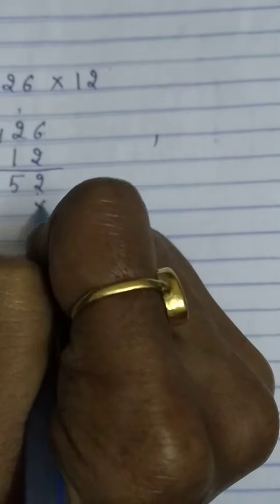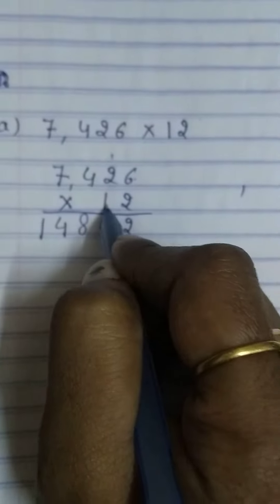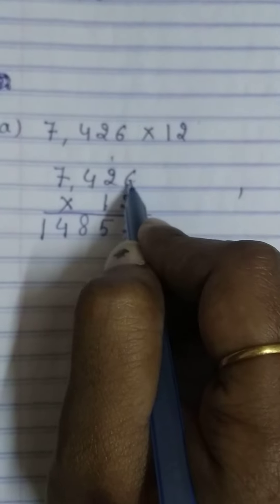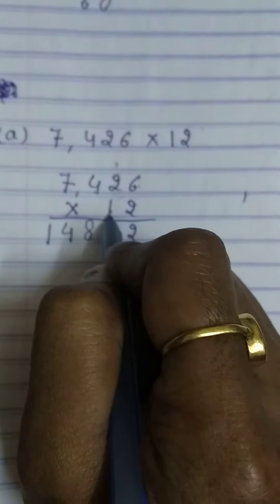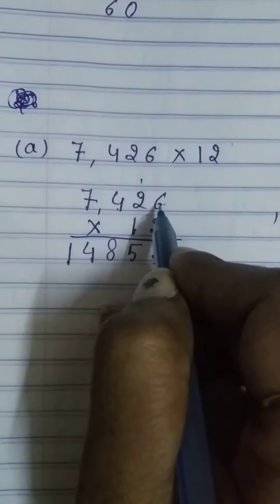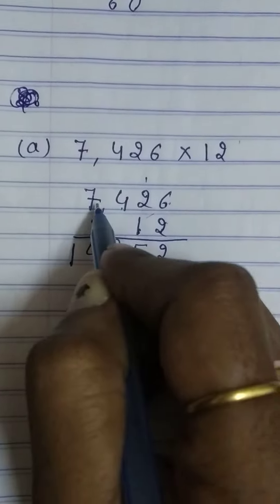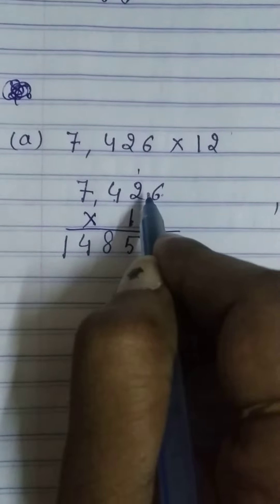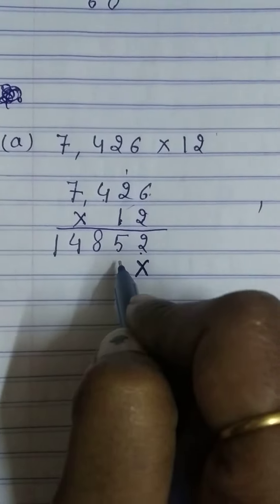Now, you have to put cross here. Now, we have to count table of 1. We all know if we multiply with 1 with any numbers, we have the same number. So, we will put same number here.